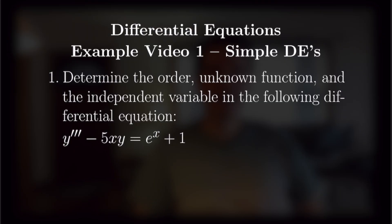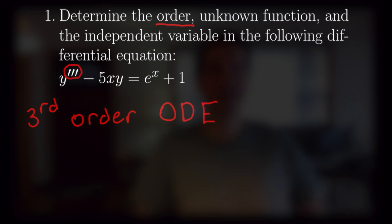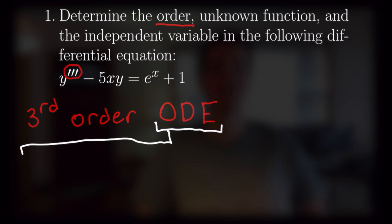Question number one says: determine the order, unknown function, and independent variable in the following differential equation. We have y triple prime minus 5xy equals e to the x plus 1. We can see that we have a y triple prime here, so that makes this a third order ordinary differential equation. You might be asking, what is an ordinary differential equation, or ODE?